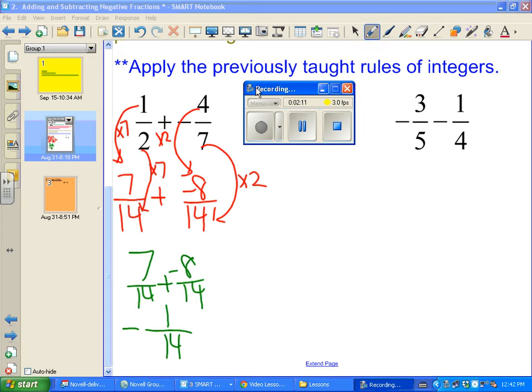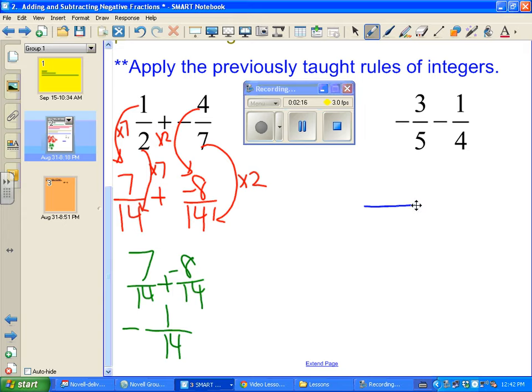We've got negative three-fifths minus one-fourth. So we're subtracting. Same rules apply. So our common denominator we're going to find is twenty. We have five times four is twenty. So negative three times four is negative twelve. We'll put that there. And four times five is twenty. One times five is five. So now it's negative twelve-twentieths minus five-twentieths. At this point, I trust you to know your subtraction rules, so without showing all the changing, I'm going to go ahead and write the answer as negative seventeen-twentieths.